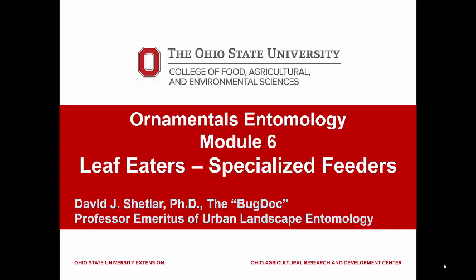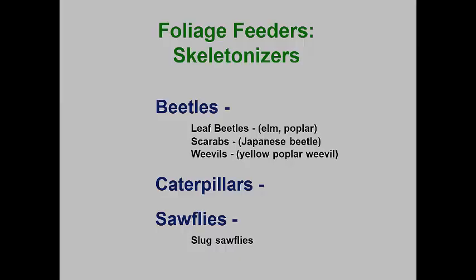Within these general groups, we can further define some of the details. As an example, some skeletonizers make fine skeletonization where all of the veins and cross veins remain, while other skeletonizers are crude and only leave a few of the larger veins behind.